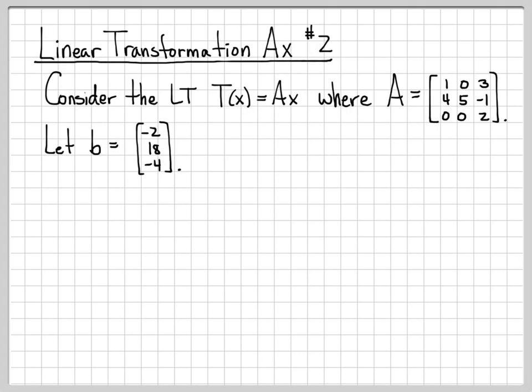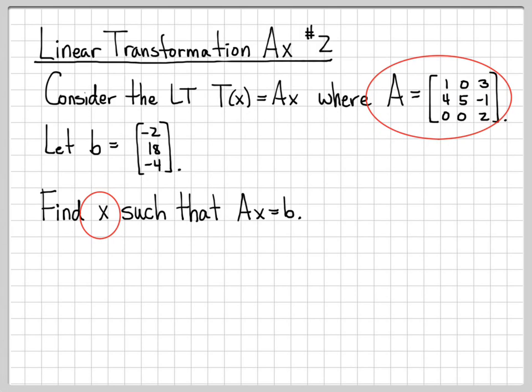We're actually told, here's your vector b. b is equal to negative 2, 18, and negative 4. And we are asked to find some matrix x such that Ax equals b. So give me a vector x such that after my matrix A operates on it, I get the vector b. So it's phrased just a little bit differently in this problem.